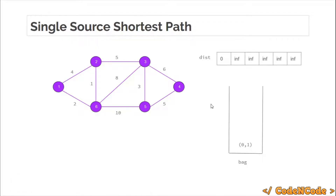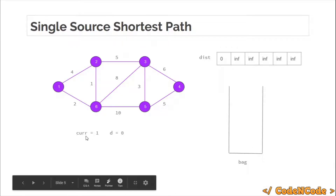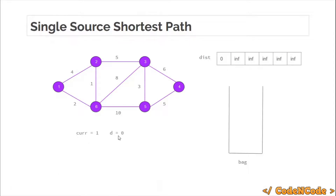This was the initialization phase. Now we would process it. We run the loop until the priority queue is not empty — very similar to BFS where we run the loop until the queue is not empty. What we do in BFS is remove the top element, and we would do the same here. In a priority queue, the top element depends on whether it is a min heap or max heap. We use a min heap because we need the minimum element at the top. So we take the element from the top, which was (0, 1): 0 was the distance and 1 was the current node.